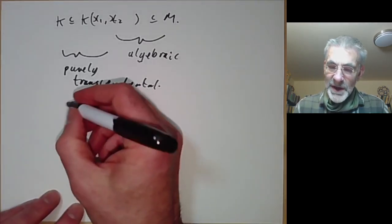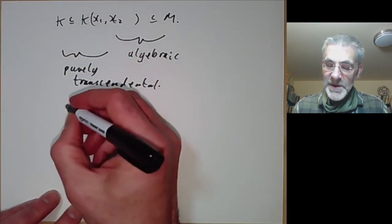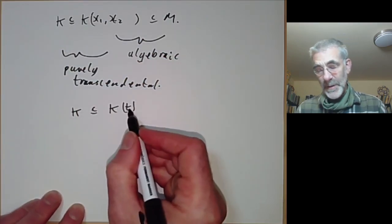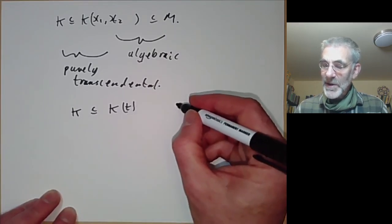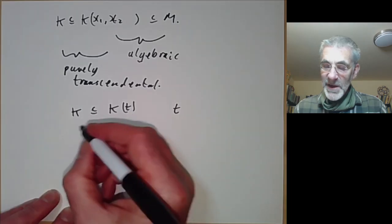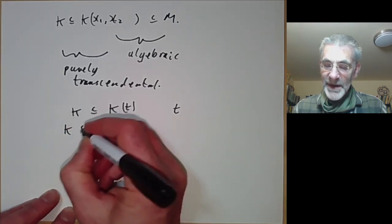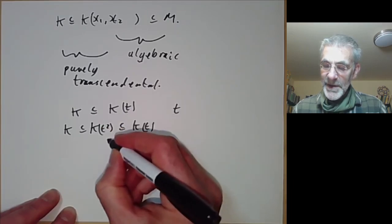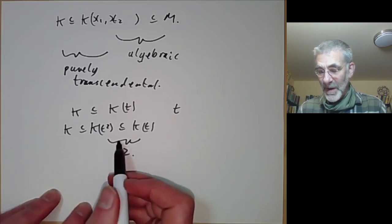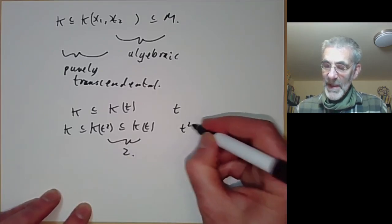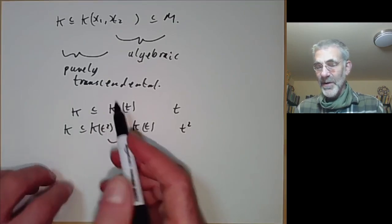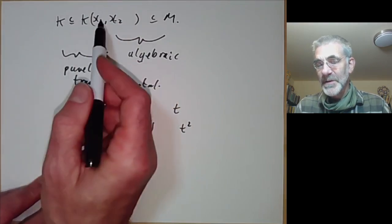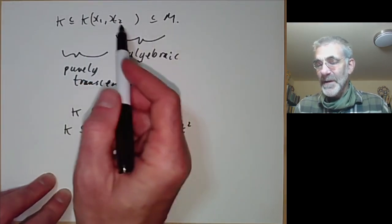This intermediate field isn't unique. For example, if you have k contained in the field of rational functions in one variable over k, then t is a Transcendence Basis for this, rather obviously. But so is t², because we can have k contained in k(t²) contained in k(t). This is an algebraic extension of degree 2, and t² is a Transcendence Basis. So there can be many different fields such that one extension is purely transcendental and the other is algebraic.